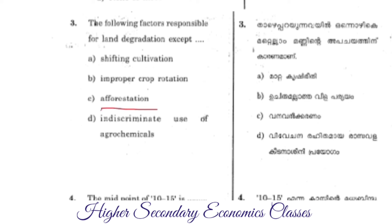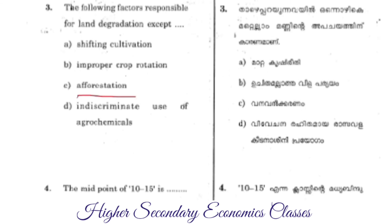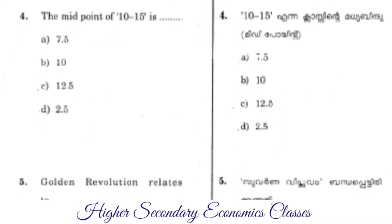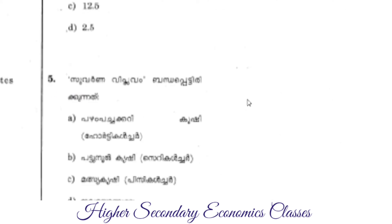The midpoint of 10 to 15 is calculated as: 10 plus 15 divided by 2, which equals 25 divided by 2, which equals 12.5.